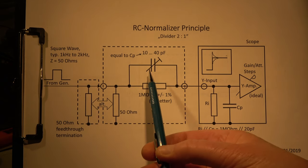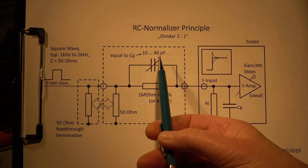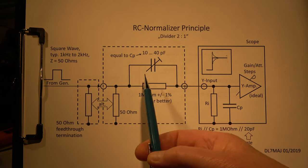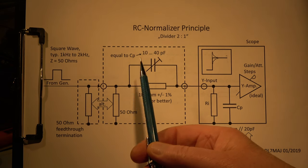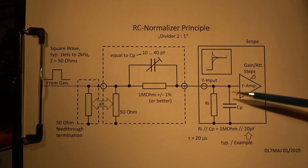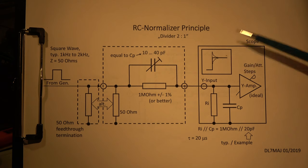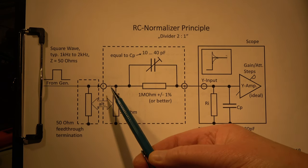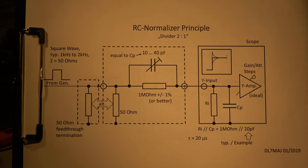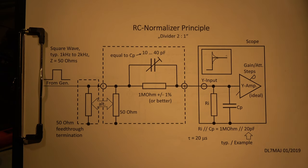The principle is that either we can use this trimmer to align for optimum response, and if there is a scale on it we can read the input capacitance. The other possibility is that when we have it set to a specific capacitance and we switch through the attenuator steps, the square wave response should be equal in all steps. We have to adjust the generator amplitude of course, because we have a divider two by one - 50% of the input voltage is lost. So this is the principle of the RC normalizer: it normalizes this input to this one, and we can see what happens at the input of the scope.